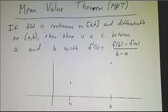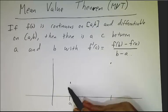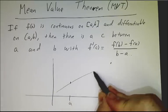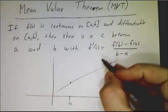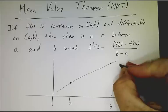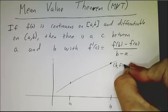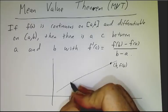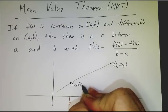We don't know what the shape of the function is, but we can figure out the average rate of change between the starting point and the end point. The end point is at b, f(b), and the starting point is a, f(a).